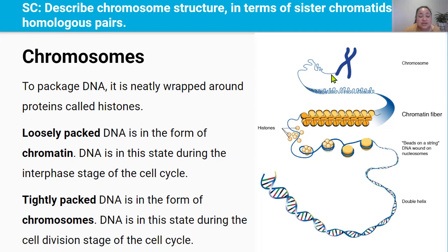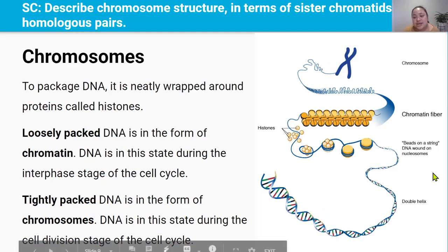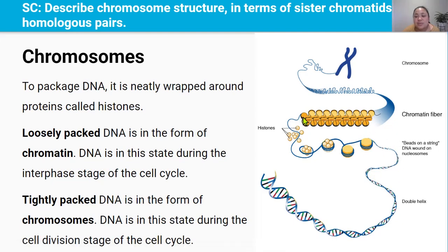Otherwise, long strands of chromatin could get tangled and even broken. This picture here clearly shows the relationship between DNA, chromatin, and chromosomes. Here's the DNA molecule, and to start packaging it, it's wound around histones. Then the histones are wound around each other to form this loosely packed structure called chromatin. And then this chromatin is further wound around each other to form this very, very tightly packed structure called a chromosome.